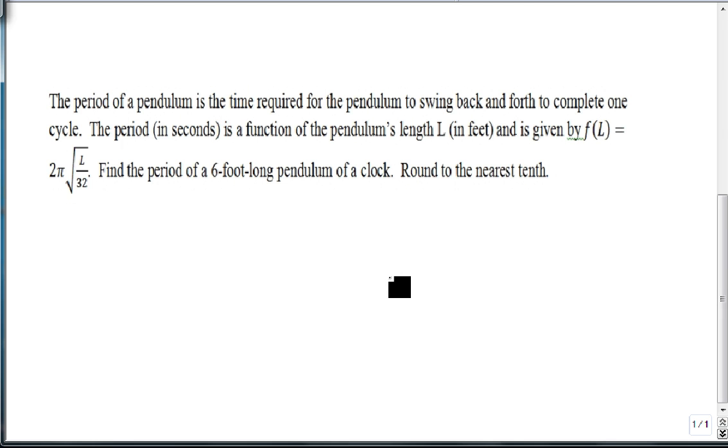How about a real-world example? Suppose we have a pendulum swinging back and forth. The period of a pendulum is the time required for the pendulum to swing back and forth to complete one cycle. The period in seconds is a function of the pendulum's length L in feet, and is given by f of L equals 2 pi times the square root of L over 32.